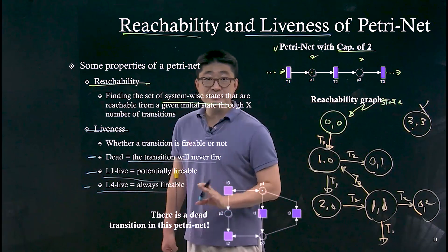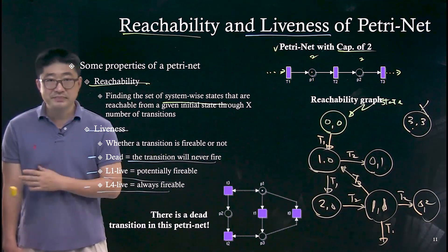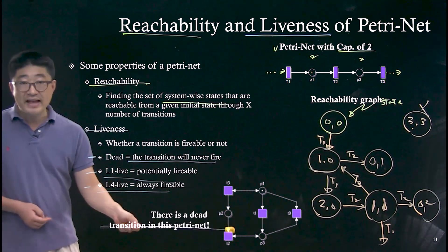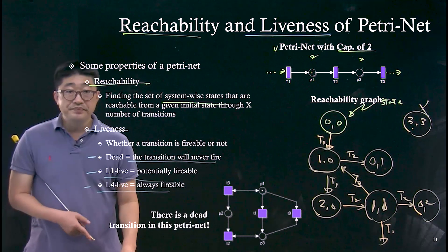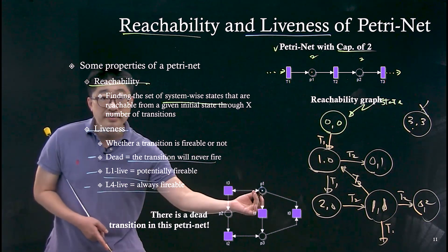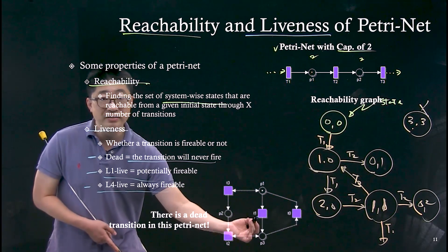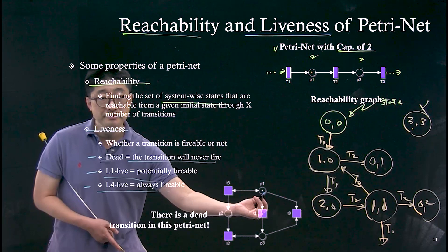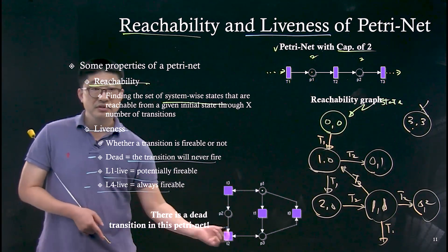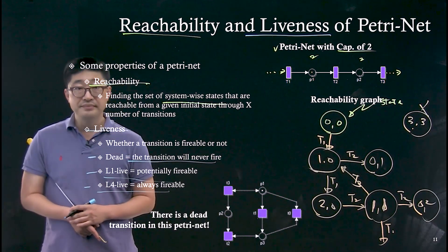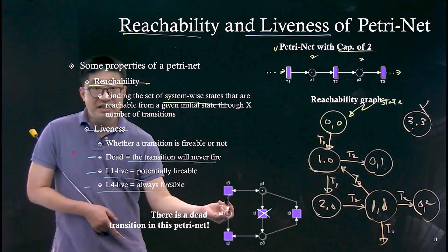Here is an example — there is a dead transition in this Petri net. Pause the video and try to identify which transition is dead. Let's find out. There are multiple transitions. P1 has a token, and T1 can be fired because it only requires P1, and the token is there — so T1 is not a dead transition. After T1 fires, P3 can have one token.